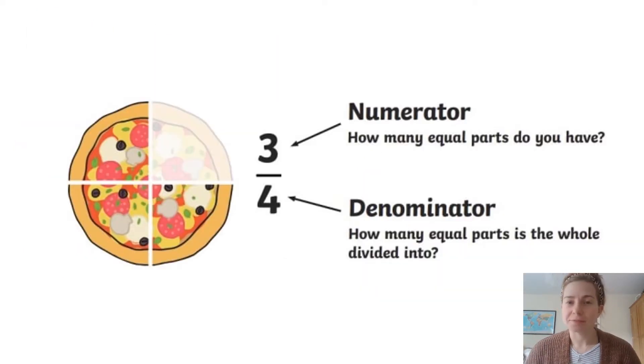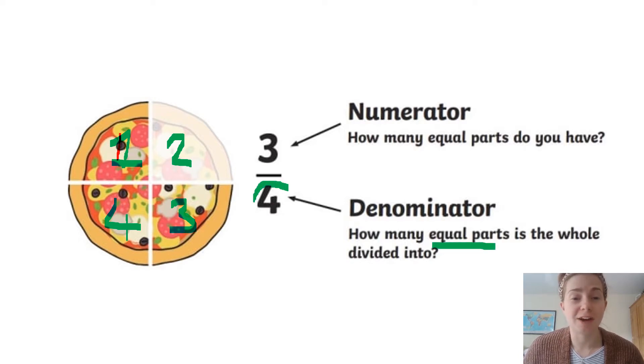So let's have a look at this pizza. Can you tell me how many parts this pizza has been divided into? Super, it has been divided into 1, 2, 3, 4 parts. We have 4 equal parts. Our whole piece has been divided into 4. So, that is our denominator.